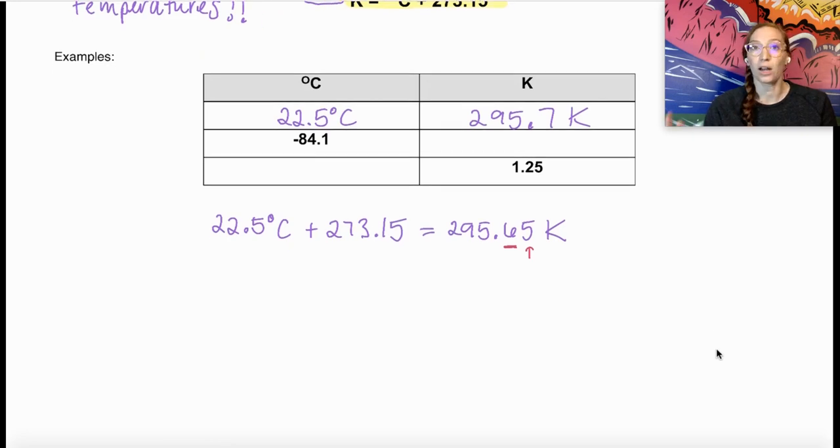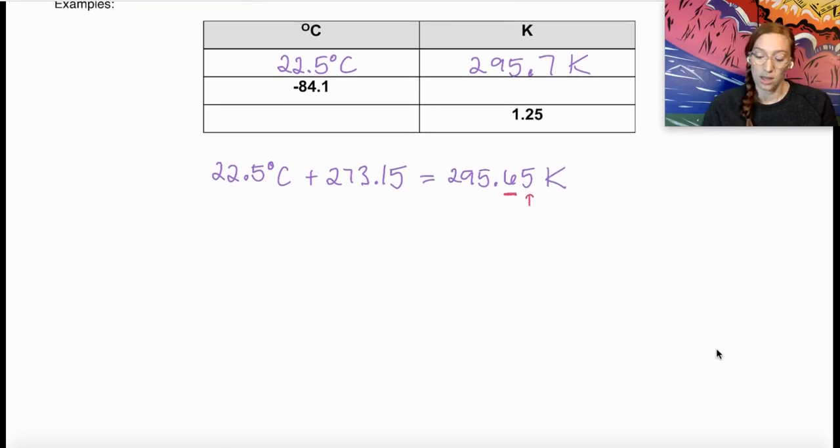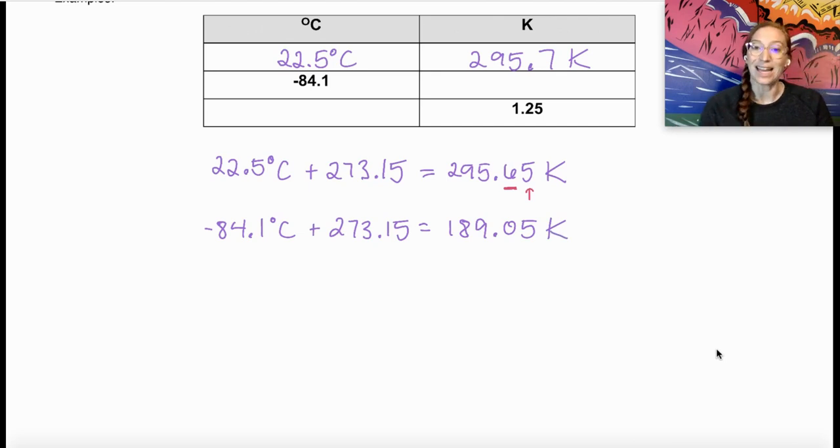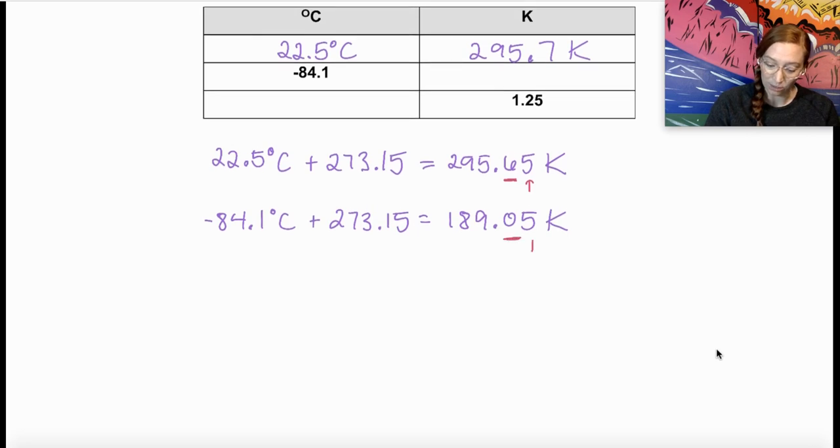For our second and third examples, we've already got values that are given to us. We're going to take that negative 84.1 degrees Celsius and we're going to add 273.15 to change that into Kelvin. Again, we talked about the fact that in the Kelvin scale, we have no negative temperatures. And we're going to see that here. When I add 273.15, I get 189.05 Kelvin.